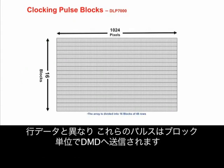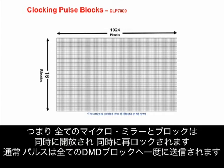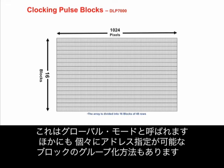Unlike row data, these pulses are sent on a blockwise basis to the DMD. For the DLP 7000 XGA device, there are 16 blocks that are 48 rows tall. This means that all micromirrors in a block are released and relatched simultaneously. Typically, the pulse is sent to all DMD blocks at once. This is called global mode.